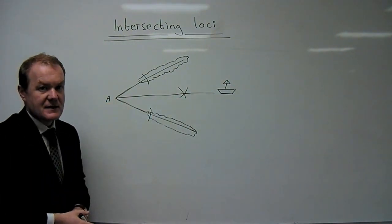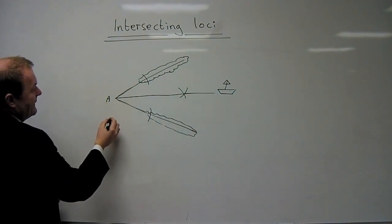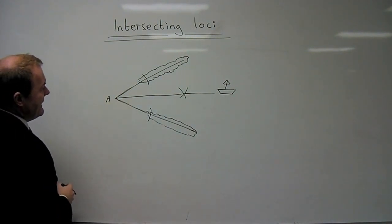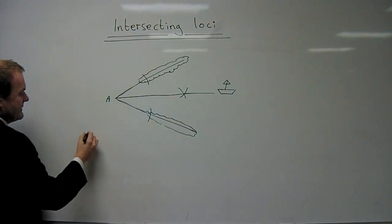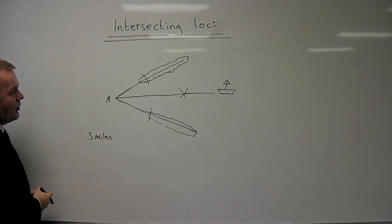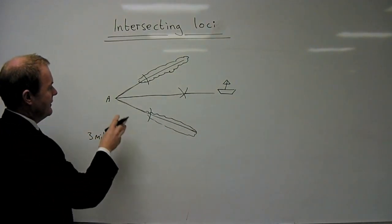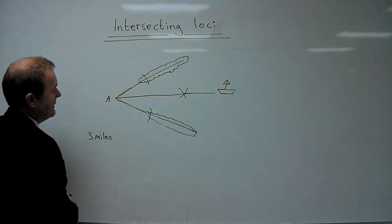They then may make it slightly more complicated by saying there's a light at A, and at A the light can be seen up to, let's say, three miles away.